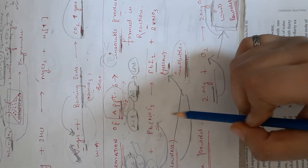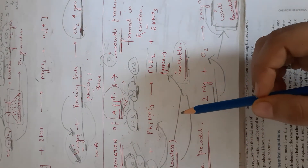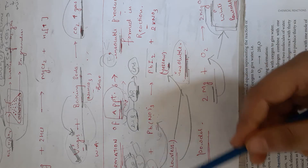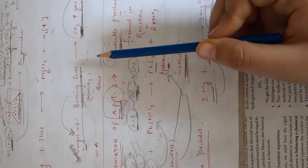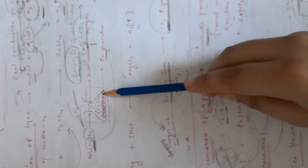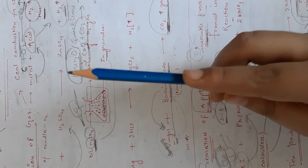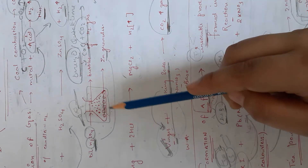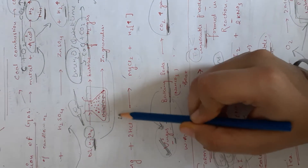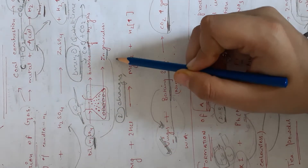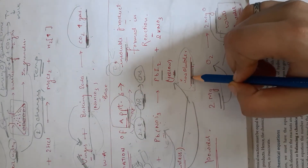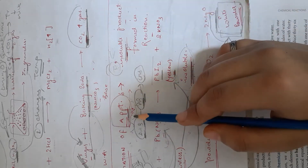Two types of changes are observed here. It is not compulsory that every reaction shows all the changes — a reaction can contain two or four changes. Above evolution of gas there are also two types of changes: whenever gas evolves, the temperature will always rise, and it may be endothermic or exothermic — we will continue that in the next class. So the two changes are: first, change in temperature, and second, gas evolution.